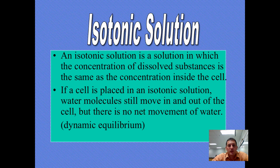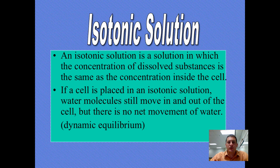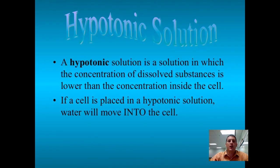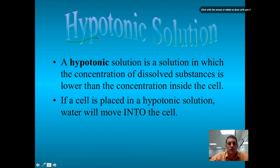Isotonic means everything is the same — the concentration of dissolved substances is the same inside and outside the cell. Water molecules still move in and out, but there's no net movement of water, maintaining dynamic equilibrium. In a hypotonic solution, water moves into the cell because the concentration of dissolved substances outside is lower than inside — the cell gets bigger. I always remembered it because hippos get bigger.